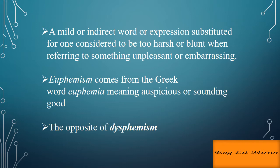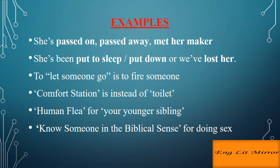Looking at its origin, euphemism comes from the Greek word 'euphemia,' meaning auspicious or sounding good. The antonym of euphemism is dysphemism, which is a derogatory or unpleasant term used instead of a neutral one.